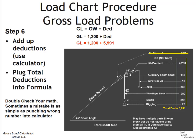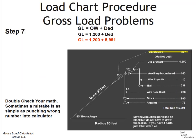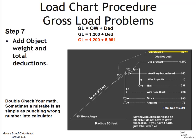It's a good idea to double-check your math — it's easy to punch in a wrong number or misread a value. Try to make time to verify your calculations. Step seven: add the object weight and the total deductions together. When we do that, we end up with a gross load value of 7,191 pounds.